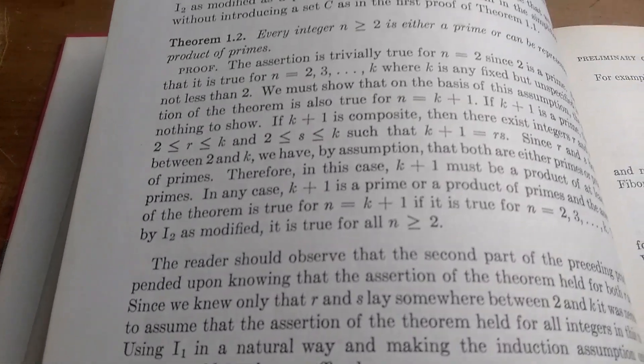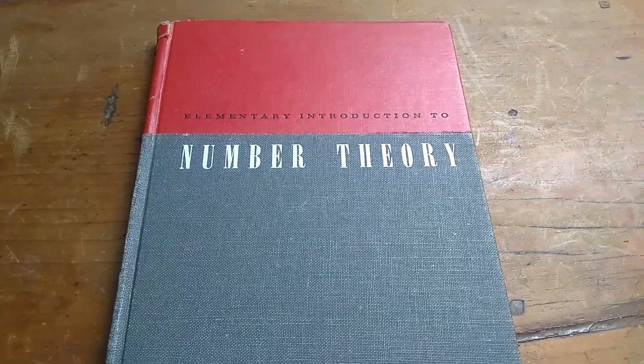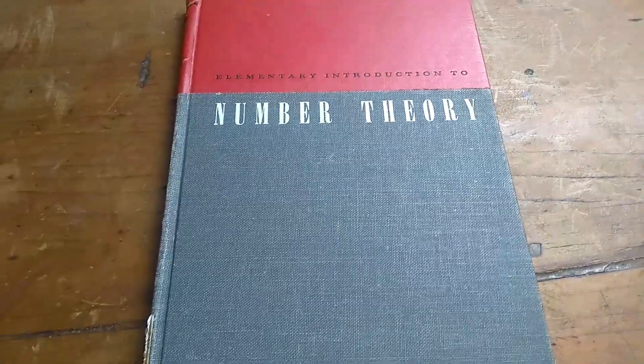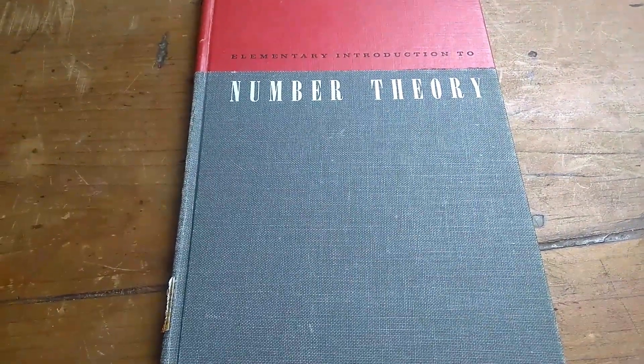So yeah, it's a really good book. Again, the book is Elementary Introduction to Number Theory, and the author is Long, Calvin Long. That's it.